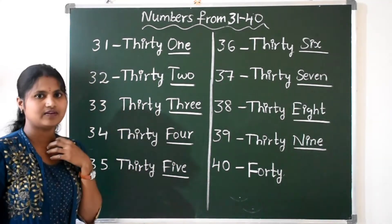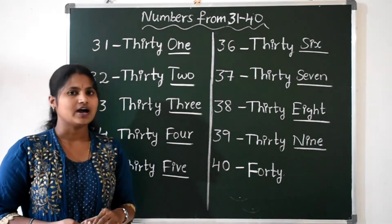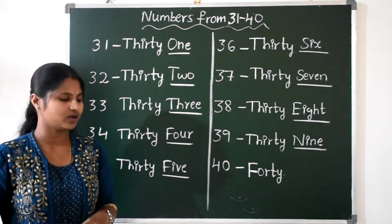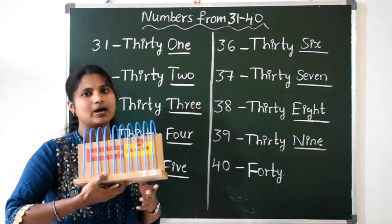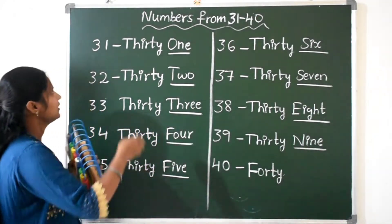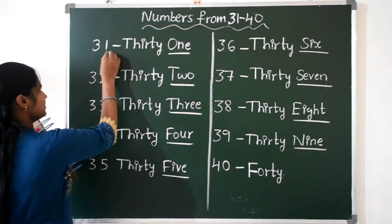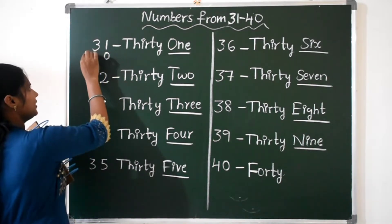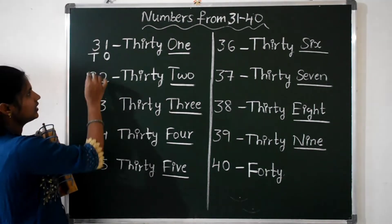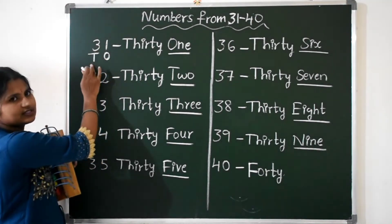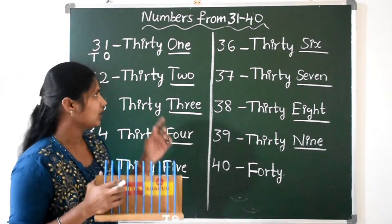Now see 31. To understand in a better way, I will show you these numbers on the abacus. This is our abacus. In 31, we have two place values: the ones place and the tens place. How many ones are here? 1 one. And how many tens? 3 tens. I am placing the beads on the abacus.